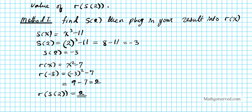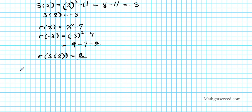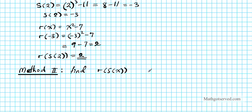Let's do the same problem using Method 2. In Method 2, we're first going to compose the two functions to get the composite function, and then evaluate the composite function at the point x equals 2. So we're going to find r of s of x, then plug in 2 for x.